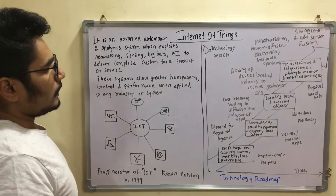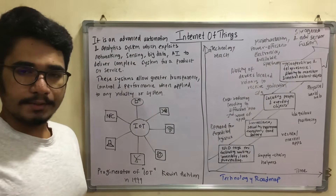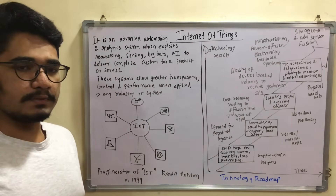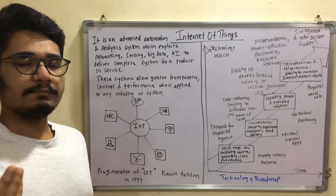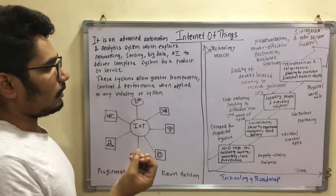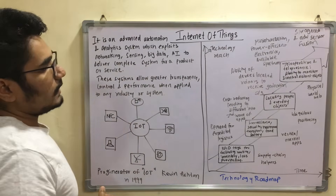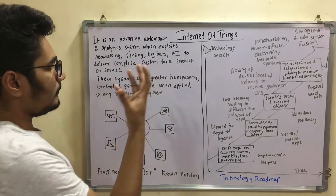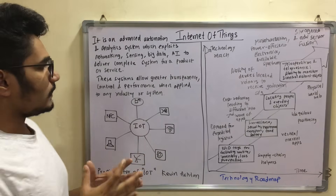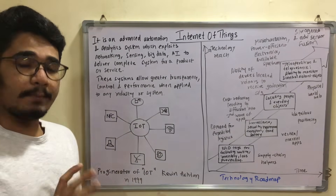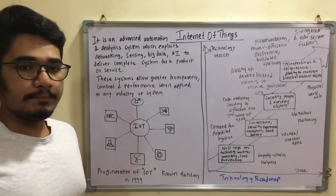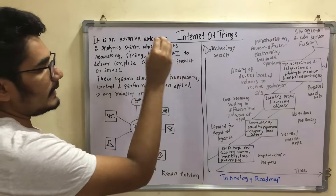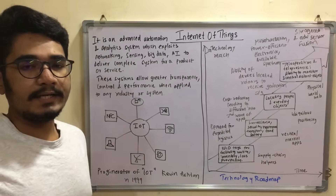IoT delivers a complete system for a product or a service. In business or industry, organizations may use tools for robotic process automation such as UiPath and Blue Prism. These are more centric to an organization or business, and they effectively communicate using technologies like networking, sensing, big data, and AI, all clubbed together with minimum human intervention.